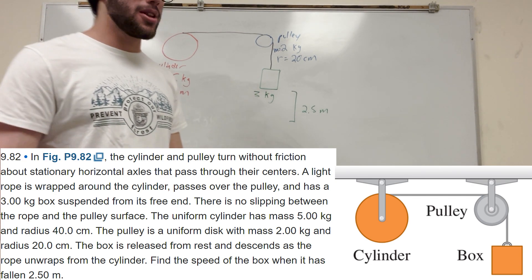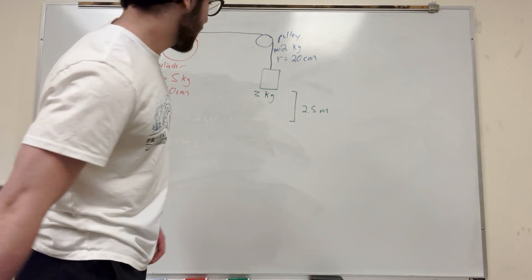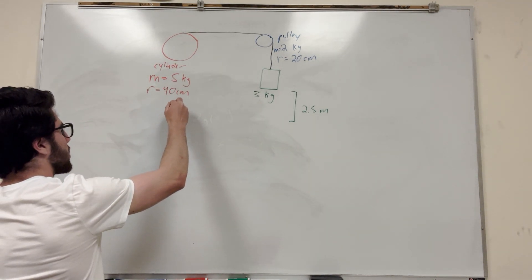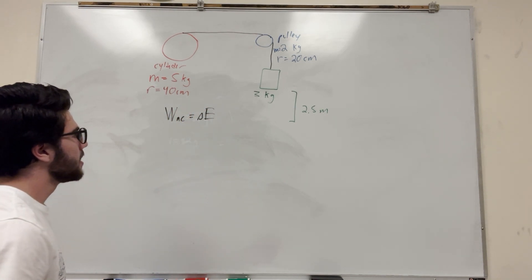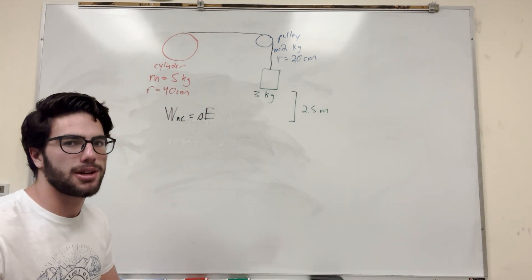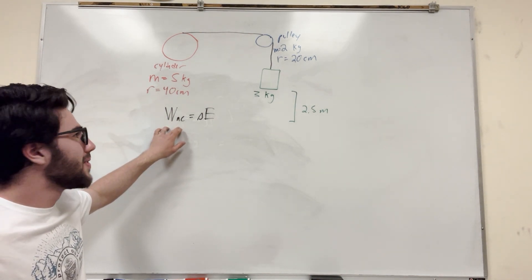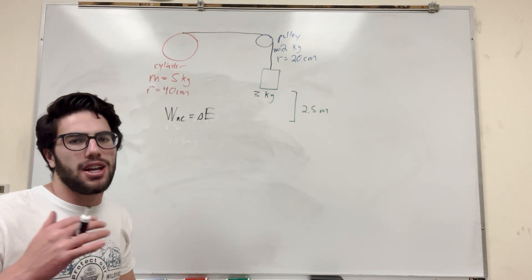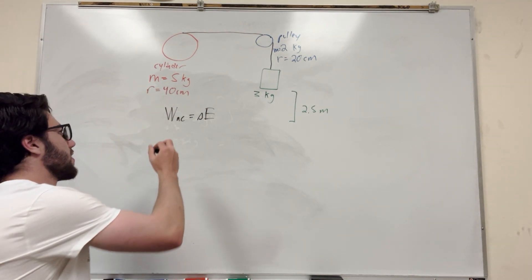Pulley problems pretty much all come down to the work-energy theorem. So let's go ahead and write that out. The work-energy theorem states that non-conservative work, which is like friction, is able to change the energy in a system. In our system, we're assuming perfect conditions, so work non-conservative is just going to be zero.